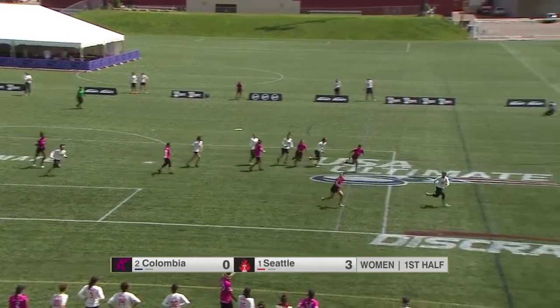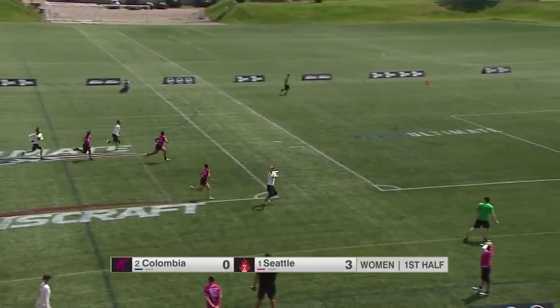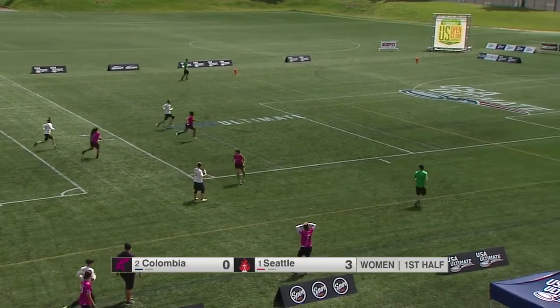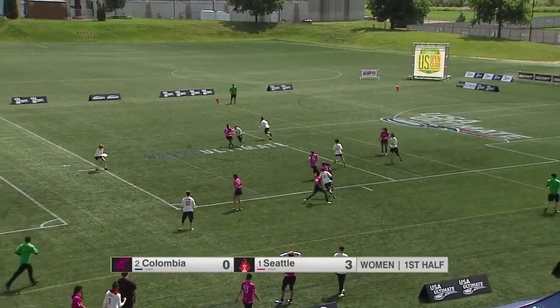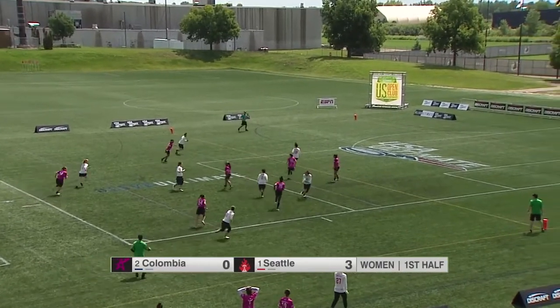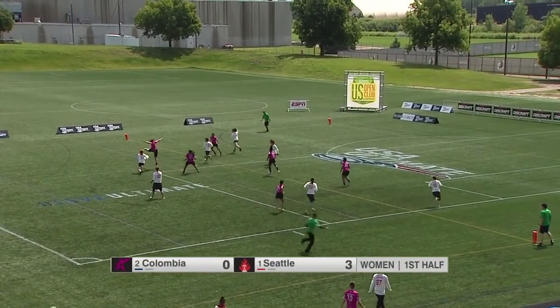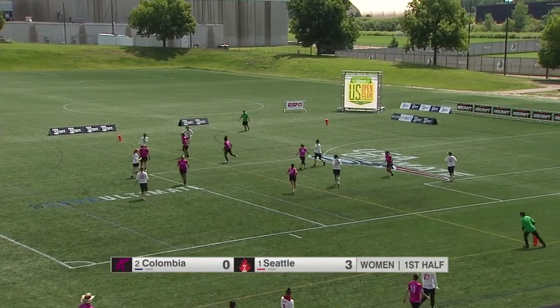Yoshida to Kelly Johnson who launches. It's a good huck, it's going to be run down by Molly McKeon. Swing back to Johnson. Idy back to Johnson, known in the frisbee world as Vegas.